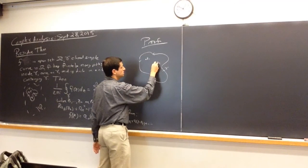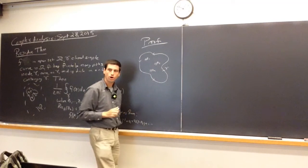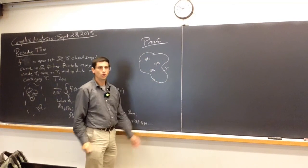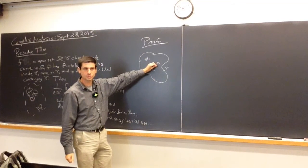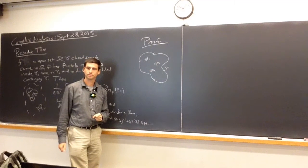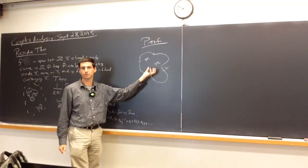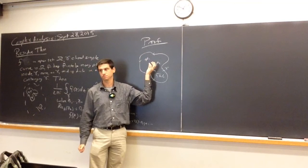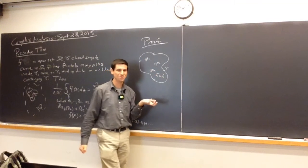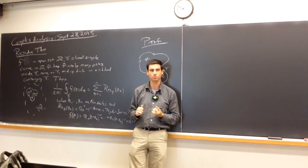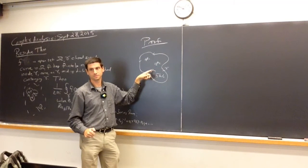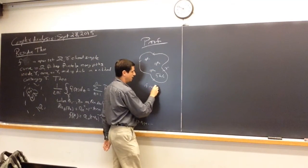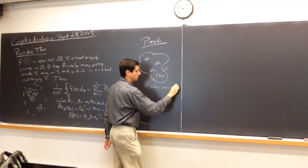We draw small circles about these points and go about all of them clockwise. What can we say about f in the region between these circles and gamma? F is holomorphic because we're staying away from the finitely many poles. Are these circles disjoint? Yes, as long as we choose the radii sufficiently small. Let epsilon be less than one-half the minimum distance between z_j and z_l. If we choose the radius less than that minimum, the circles are disjoint.